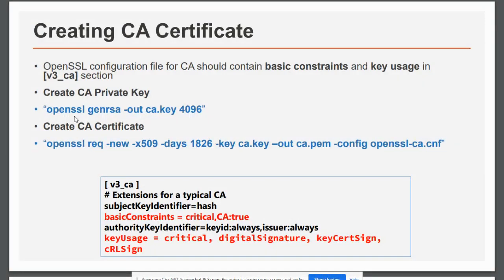The OpenSSL command to generate a private key is 'openssl genrsa', and we also define the size of the key, which is 4096 bits. The output of this command is a private RSA key that is 4096 bits long, and it will be saved in the CA.key file.